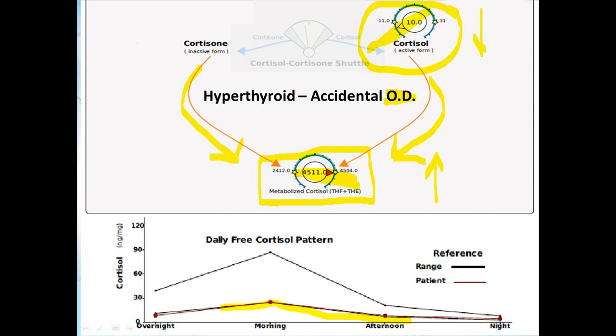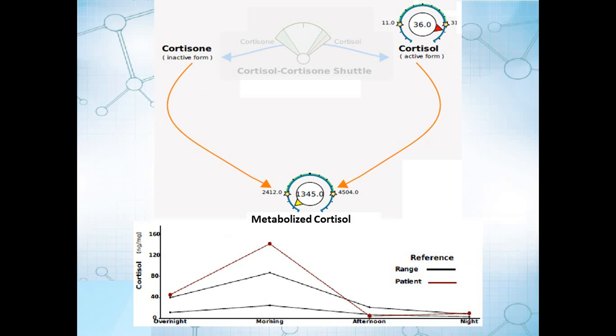If we look at this patient here, this is a hypothyroid patient. And you'll notice the free cortisol is relatively high overall. So the urine-free cortisol is high. But the metabolized cortisol is actually extremely low. And this is a fairly extreme case where they had really, really low levels of thyroid. And what does that lead to? Sluggish cortisol clearance.